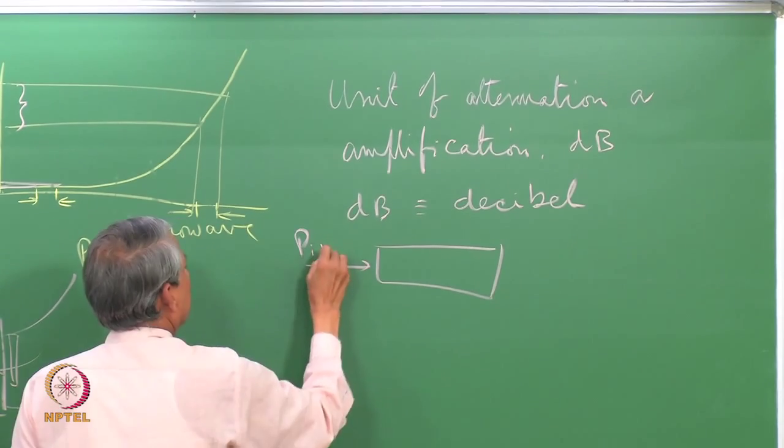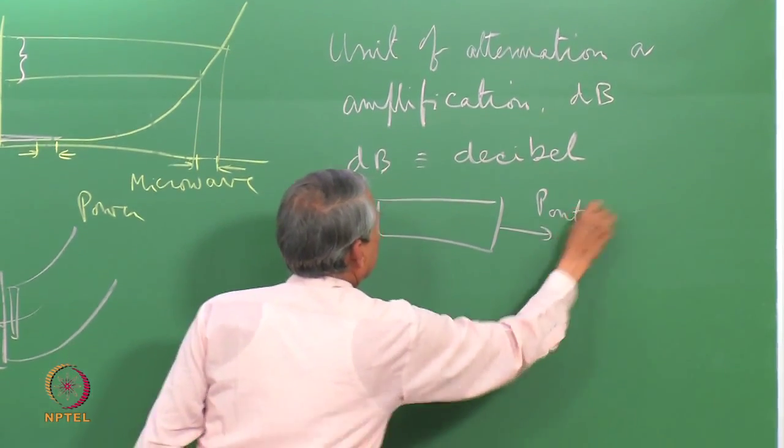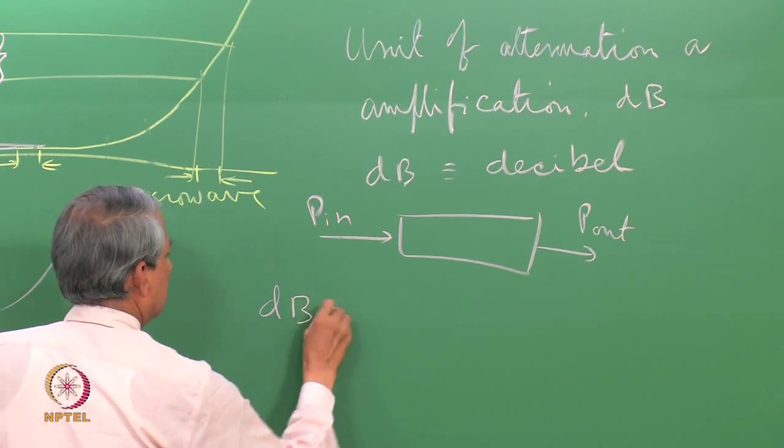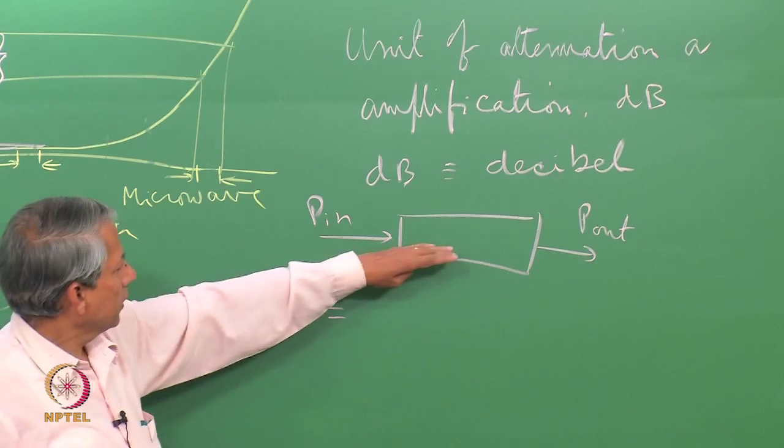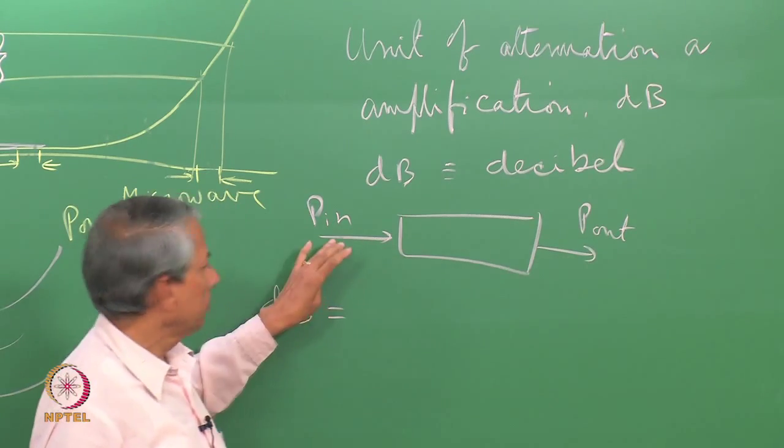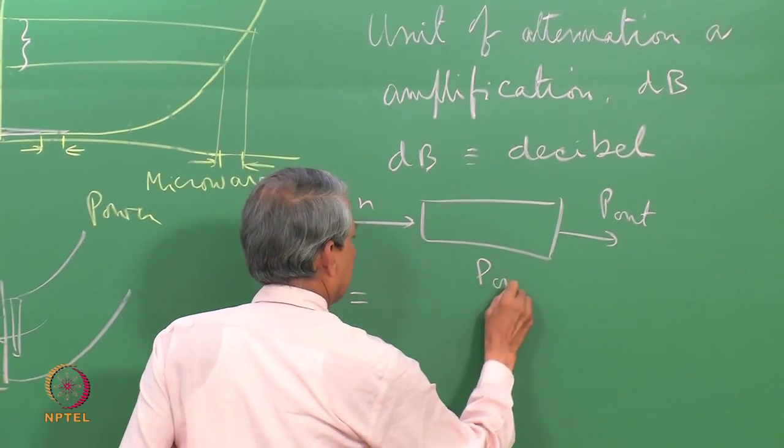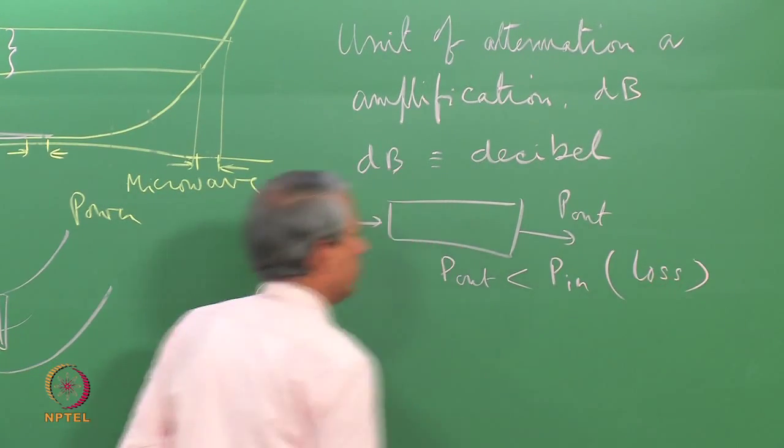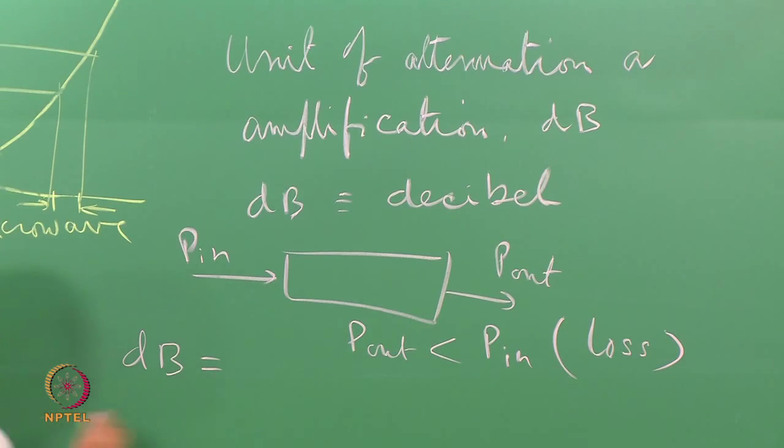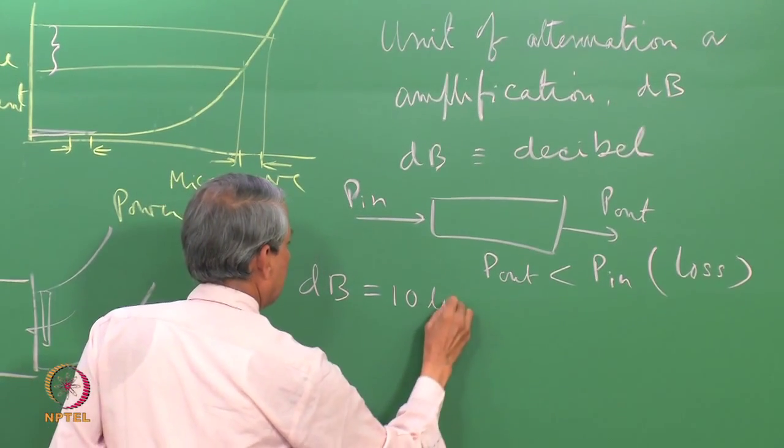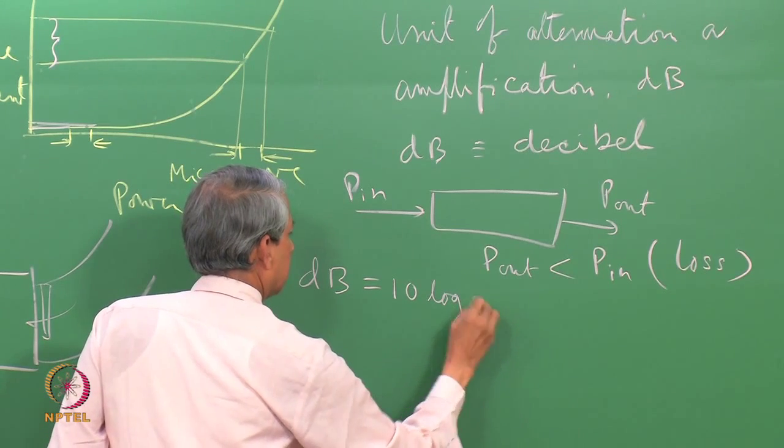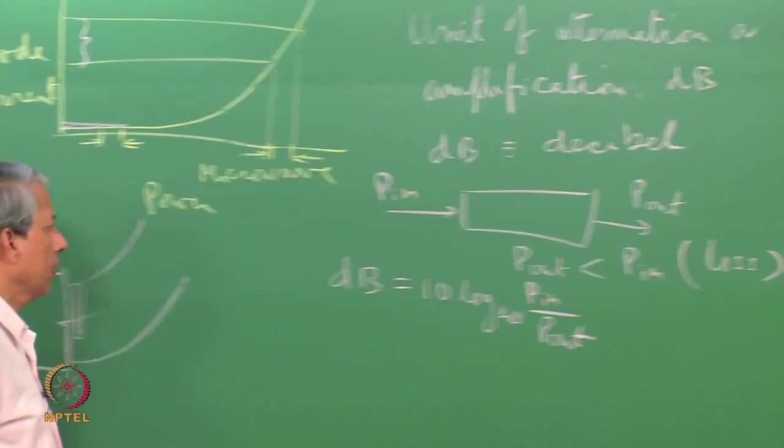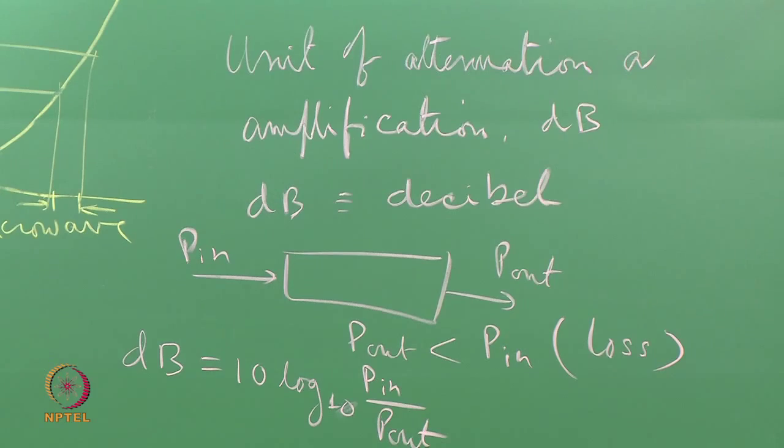How do you define it? Let's say some gadget is here, power is going in, power is coming out. Here, if power is getting lost, of course P out will be less than P in—some loss is taking place. The dB loss is given as 10 log to the base 10 P in by P out. This is a logarithmic scale.